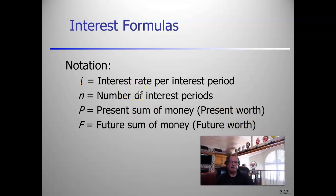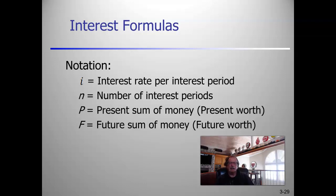Some notation: i is the interest rate per period, and N is the number of interest periods. So if we have one year but analyze it monthly, N equals 12 months, and we need to convert an annual interest rate to a monthly rate. P is the present sum of money and F is the future sum of money — present worth and future worth.